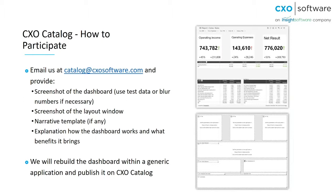We'd love to know how the dashboard works and what the value is for you, as that helps us explain its value on CXO Catalog. Once we have all that, we rebuild the dashboard using our generic application and publish it on CXO Catalog. I'd really like to invite all of you to start using CXO Catalog. The sharing part is something you can already do today with version 6.3 or even earlier — just send us the information. We'll look at every report to ensure it's generic enough to publish. Most reports we can definitely publish, though some may be too specific — in that case we'll communicate with you about an adjusted version.